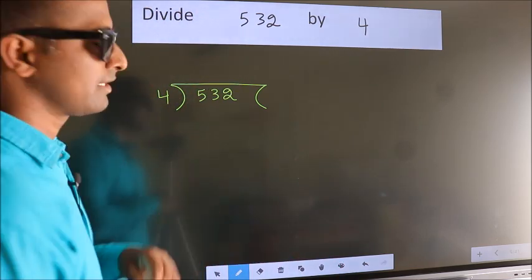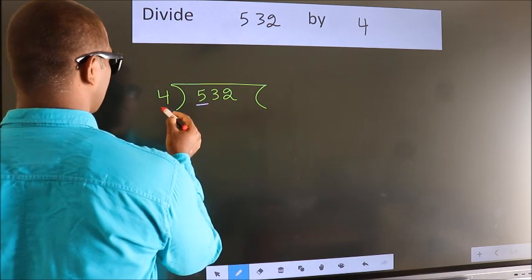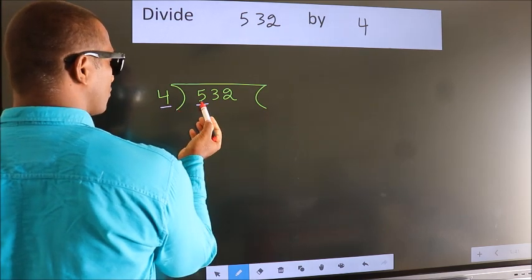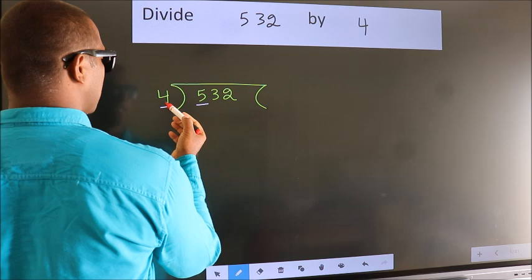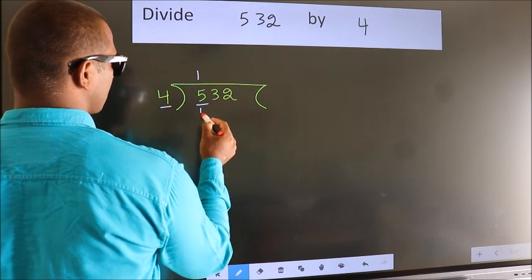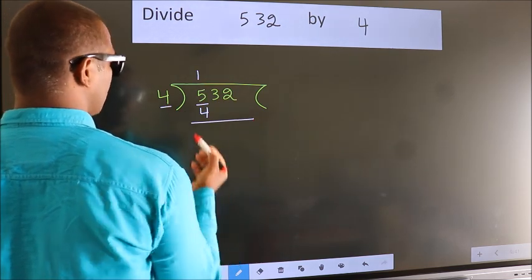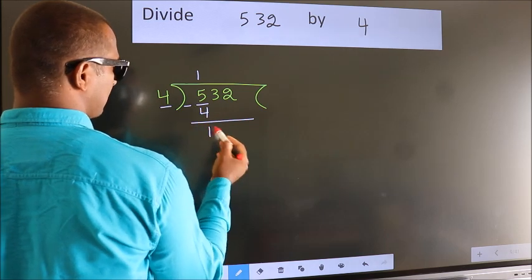Next. Here we have 5, here 4. A number close to 5 in 4 table is 4 once 4. Now we should subtract. We get 1.